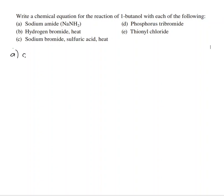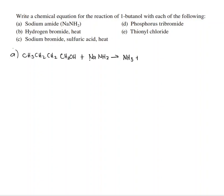1-butanol is CH₃CH₂CH₂CH₂OH. You react it with NaNH₂. NH₂ is a very strong base, so it will pull off the H, and NH₂ becomes NH₃, and what happens is that Na gets with the O.